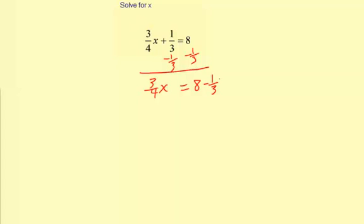To combine the 8 and the 1/3, I need to have a common denominator. So I'm going to multiply the 8 times 3/3, which equals 8 times 3, which is 24, divided by 1 times 3, which is 3.